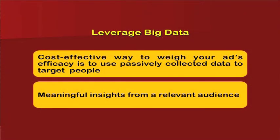Leverage big data — a cost-effective way to weigh all ad efficacy is to use passively collected data to target people. Meaningful insights from relevant audiences can be derived from this data because data speaks a lot about trends — increasing trends, passive trends, and changing trends. The analysis of data can give us the intentions of people: where they are shopping, how they are shopping, and what their motivations are. This is a simple and basic way of testing advertising measures.